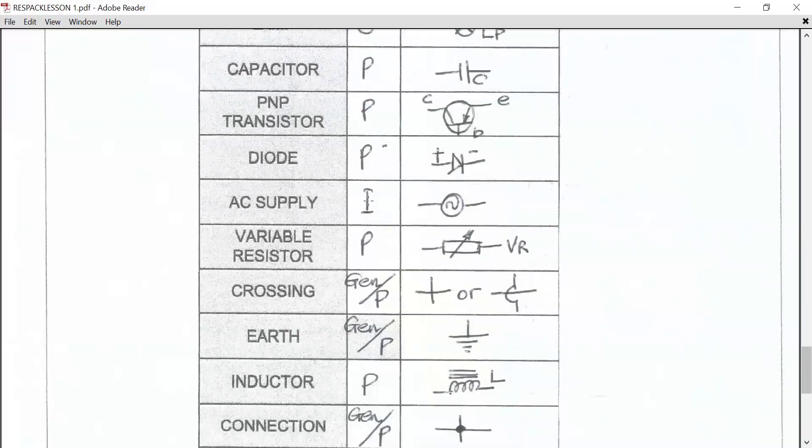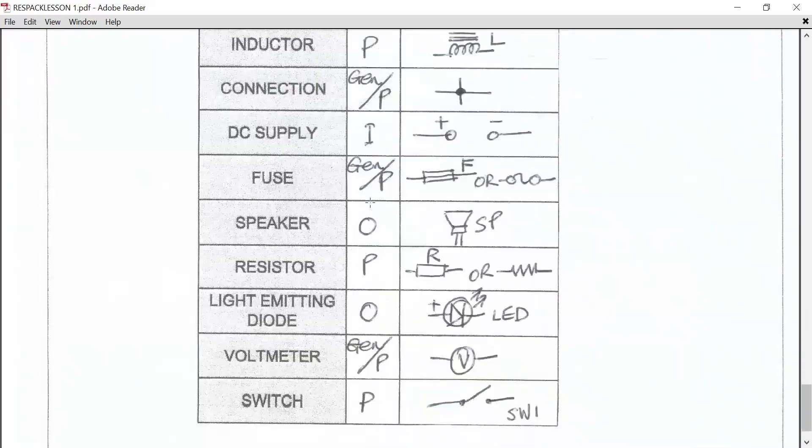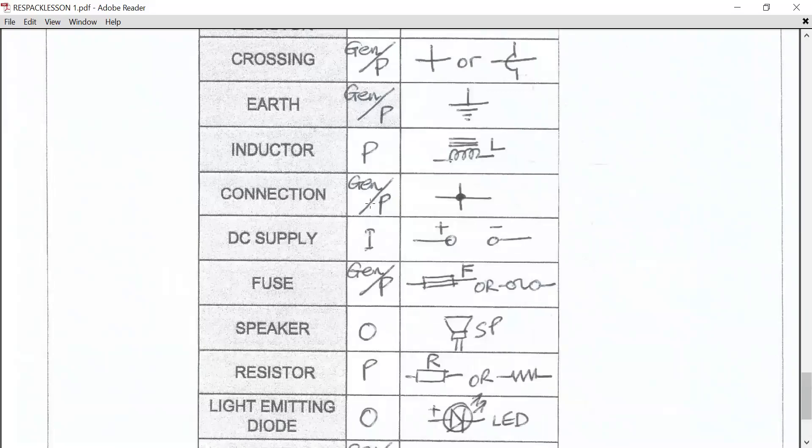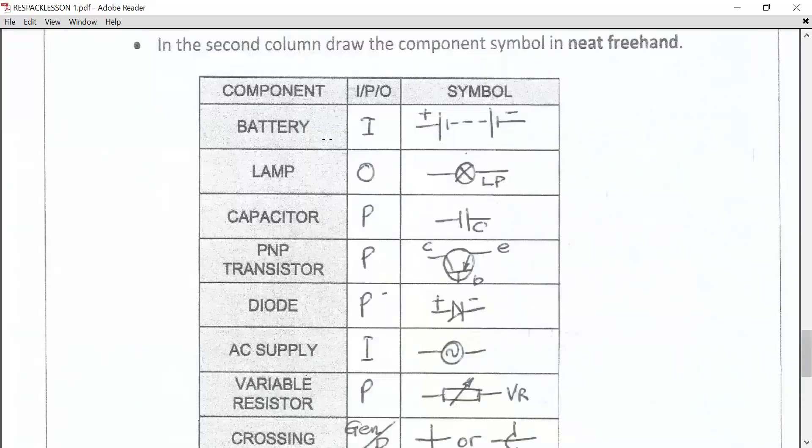Now you may notice that I drew this thing in ink. You will not draw it in ink. I do it in ink for you to have a look so it can be clear. Every circuit diagram must be drawn in pencil. Let's start at the top.